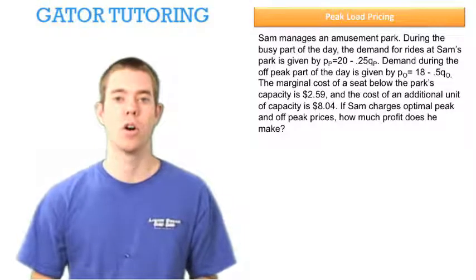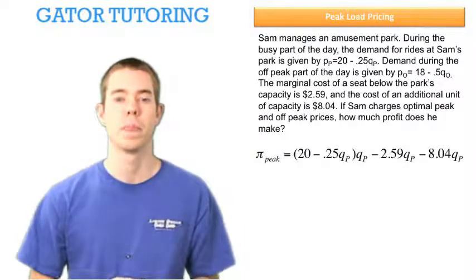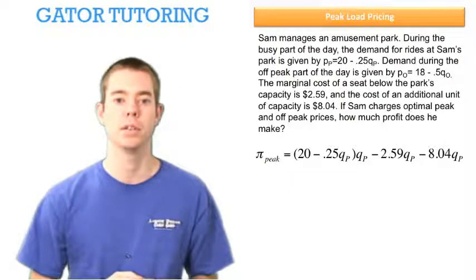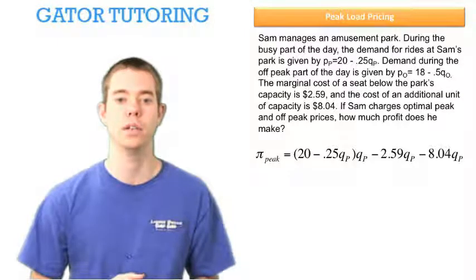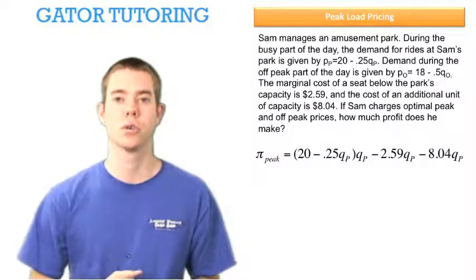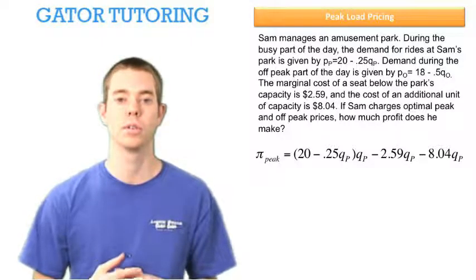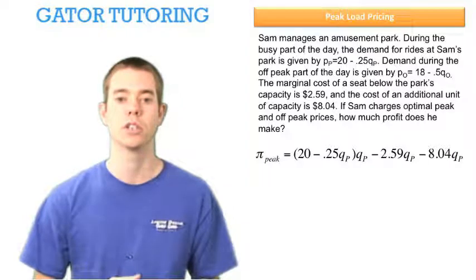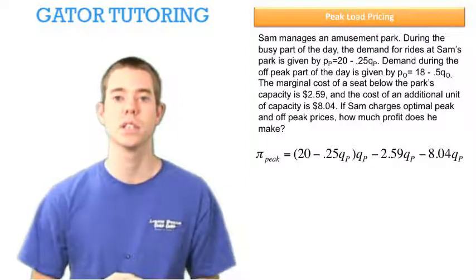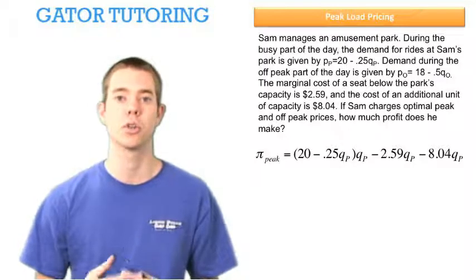Let's start by writing our profit during a peak period. The profit during the peak period takes the total revenue from the peak period which is the price times the quantity, or 20 minus 0.25 QP times QP, and then minus its total cost where total cost is not only the cost below the park's capacity of $2.59 but also an additional unit of capacity cost of $8.04. The reason is because our peak period determines our capacity.